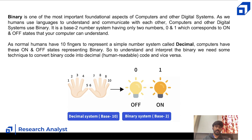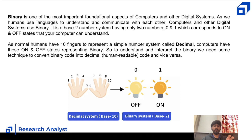Binary is a base-two number system having only two numbers: zero and one. It corresponds to the on and off states in a computer — one means on, zero means off. You can see this in the image: on is one, off is zero. Even on a simple digital switch, one means the switch is on and zero means it is off.